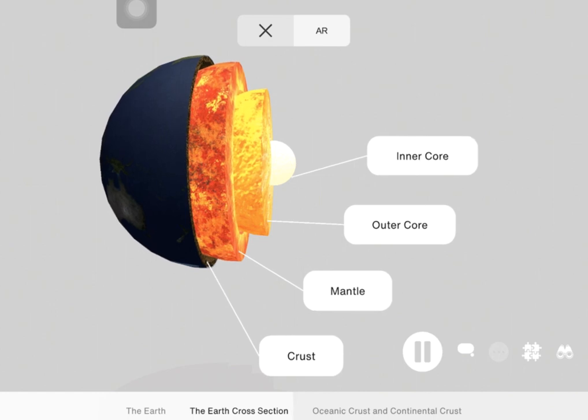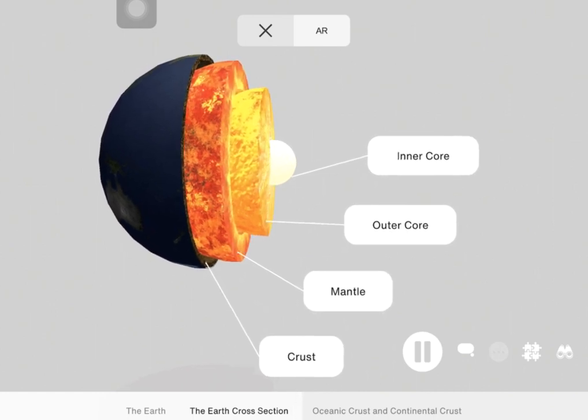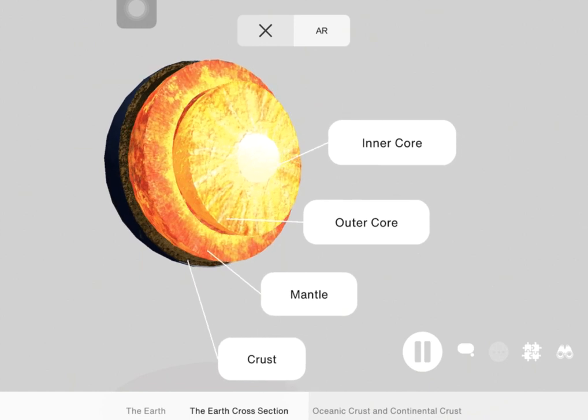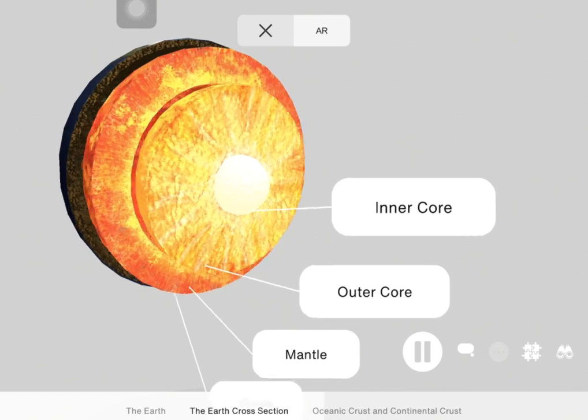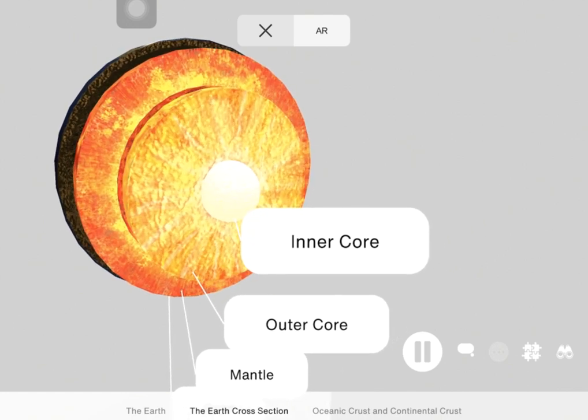Below the lithosphere is a layer of upper mantle called the asthenosphere. Now this is made up of rock that is fluid and can typically move. It is this fluidity that powers the movement of the tectonic plates of the Earth's crust.